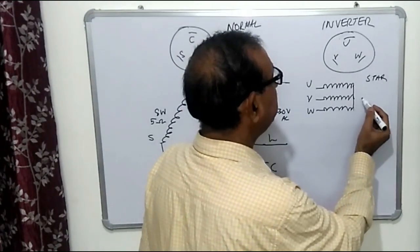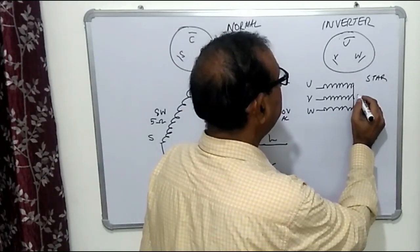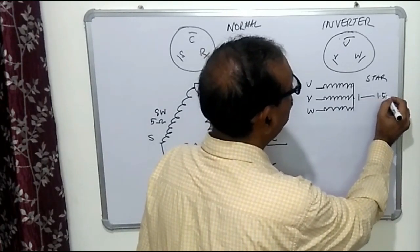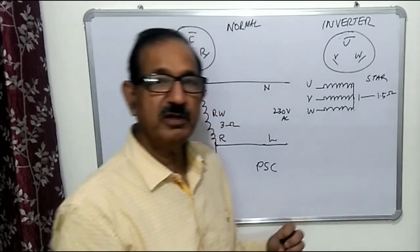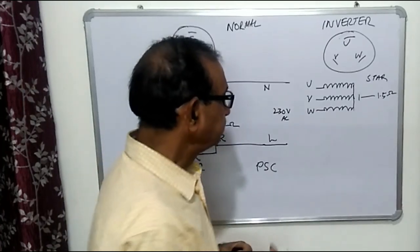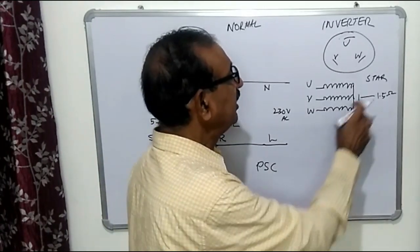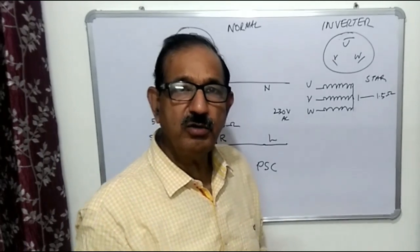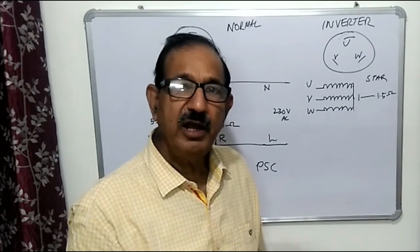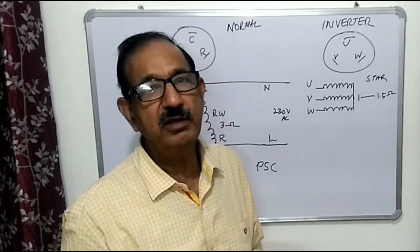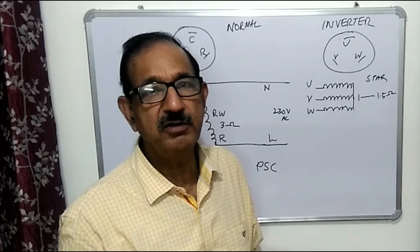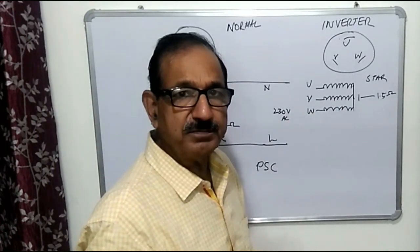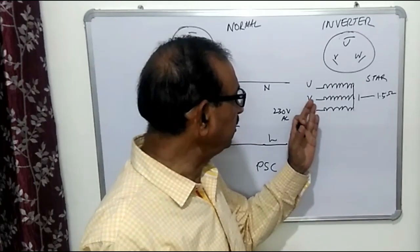Since all three windings have the same resistance, if we measure the resistance between U, V, and W terminals, we will get the same value — around 1 to 1.5 ohms, though this can vary by compressor. Similar to before, if the value is 0 ohms then the winding is short, and if the value is infinite then the winding is open.